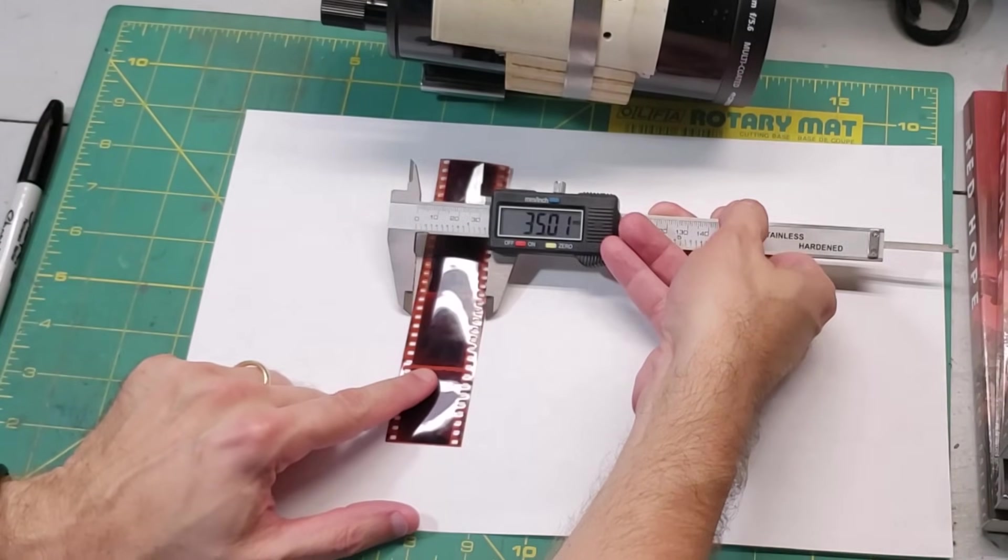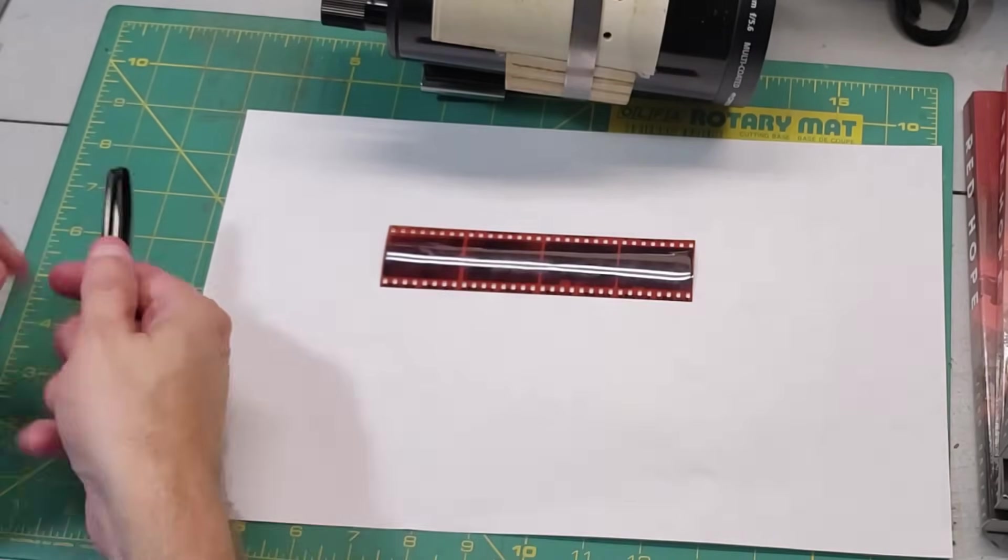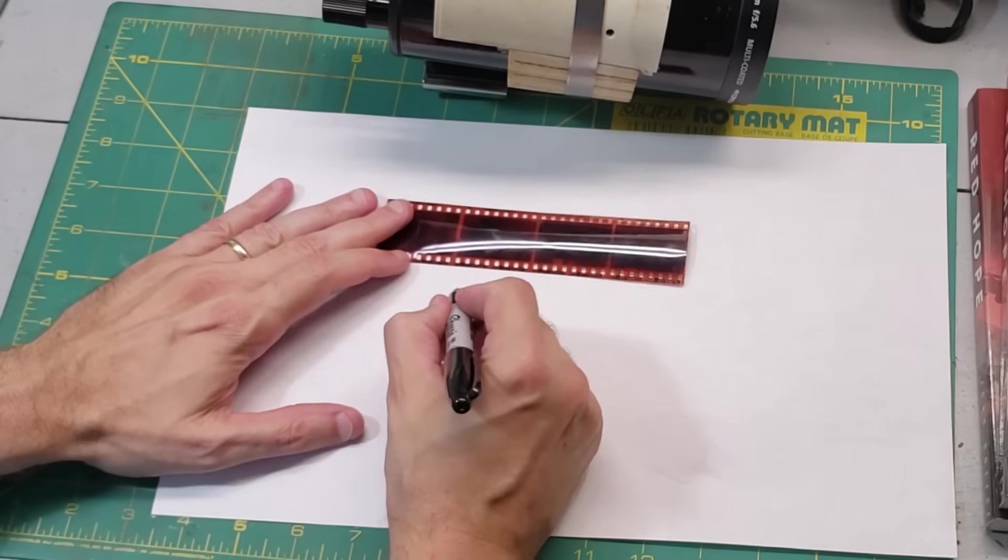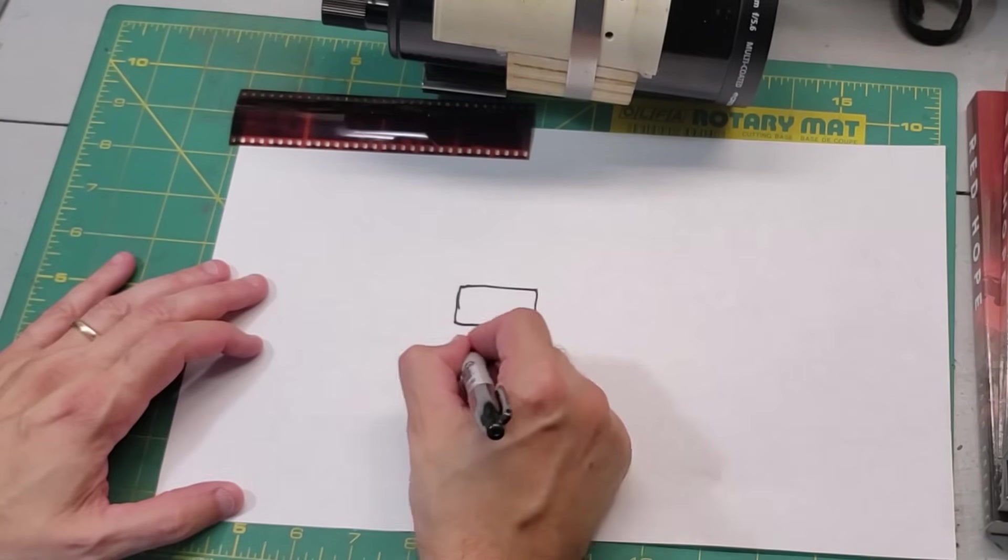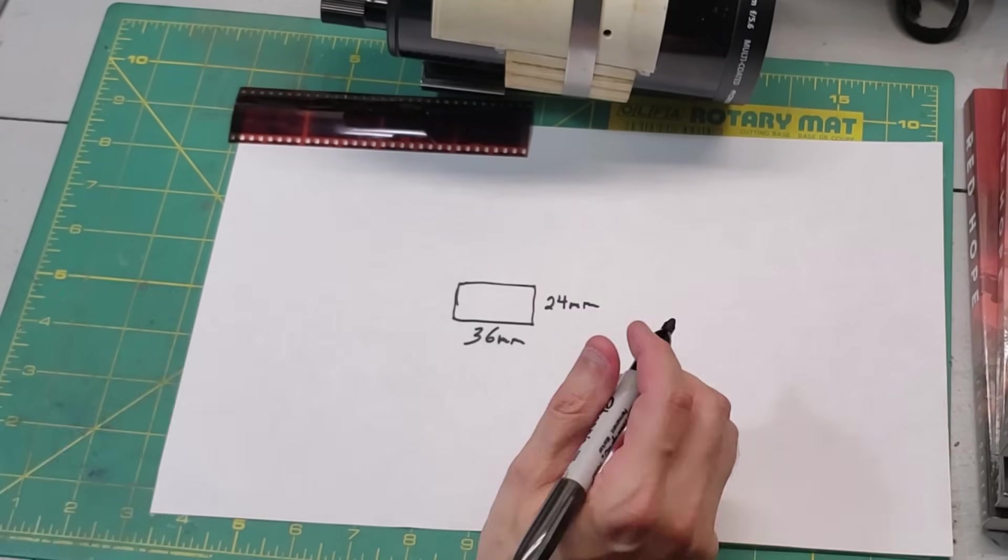Each of these pictures that you see on here has a dimension of 36 millimeters by 24 millimeters. It's a ratio of about 1.5, not quite the golden ratio, but hey, it's worked for a long time.